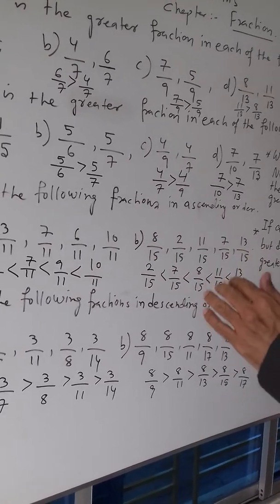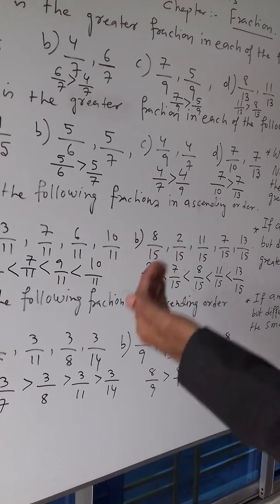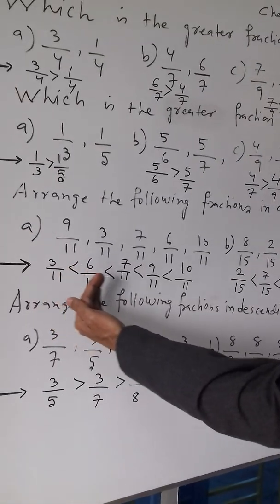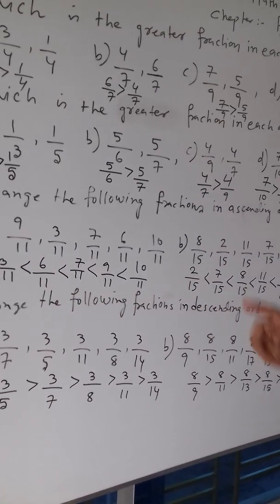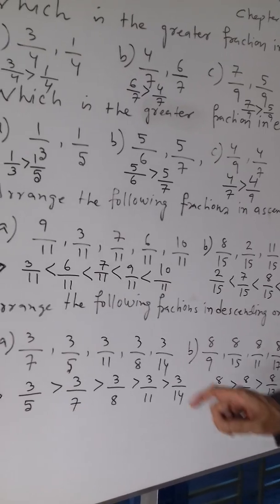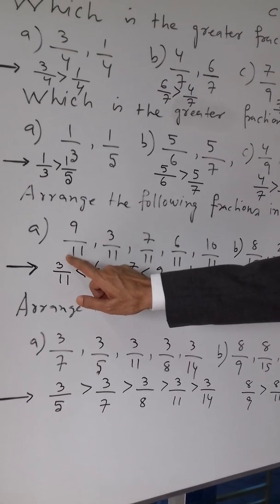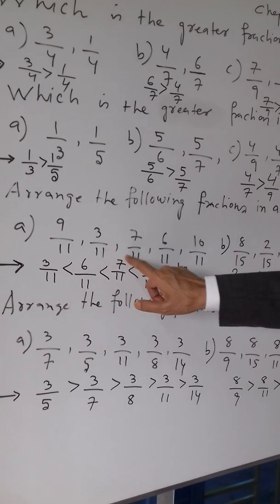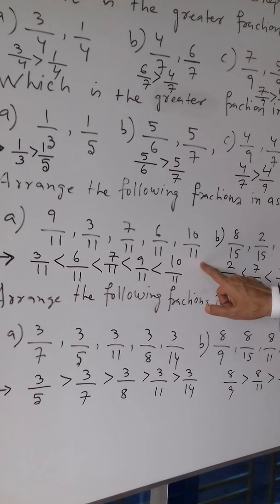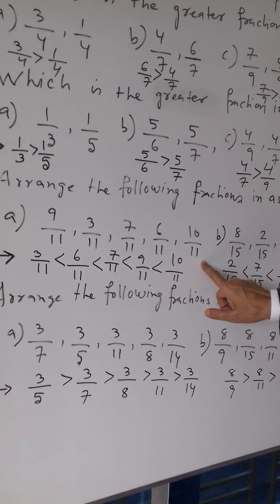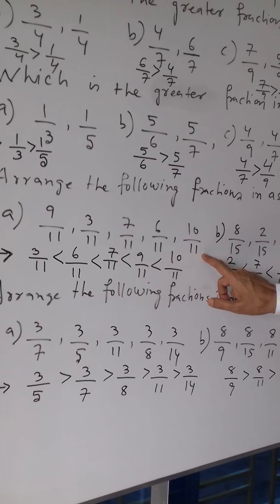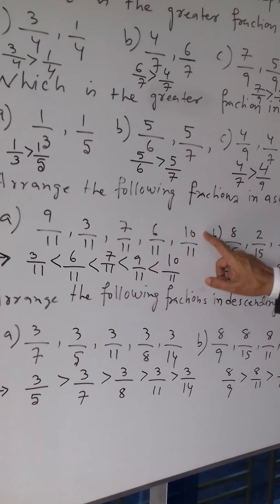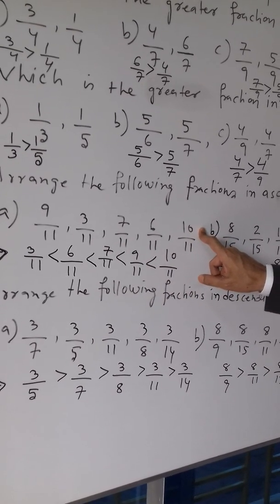Ascending order means you have to write the smallest one first, and then it must proceed to the greatest. Since all the fractions have the same denominator, the fraction having the highest numerator will be the greatest.